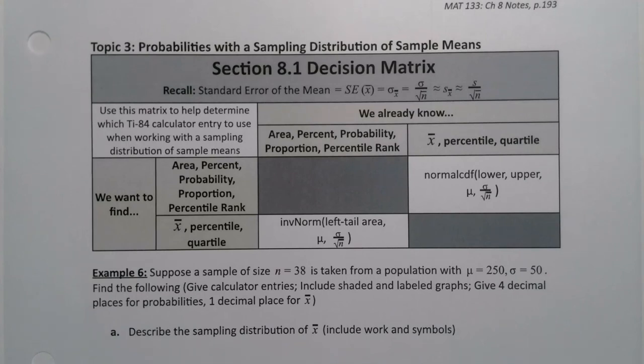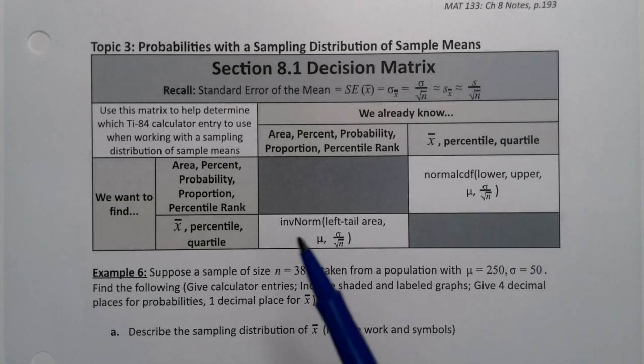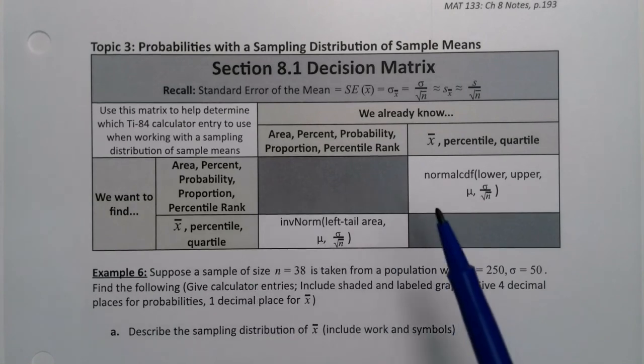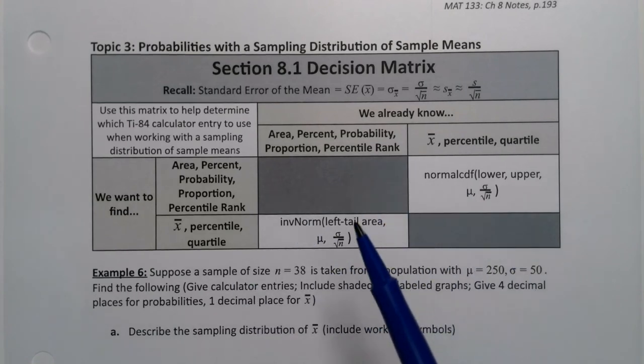Since we're working with a normal distribution, that means we should be able to find probabilities or find particular x-bars. We should be able to use normal CDF and inverse norm, the same things we were working with in Chapter 7, but now in a Chapter 8 context. We can use this matrix to determine which TI-84 calculator entry we should use. StatCrunch would be very similar, but won't need the calculator entries per se.